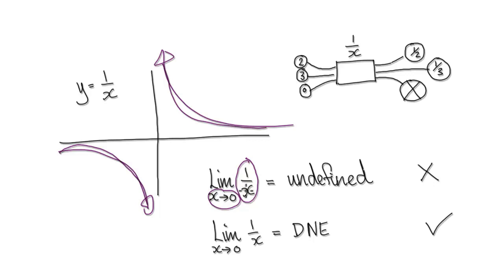But when I ask you, do the two meet up, and then you say the machine breaks down, that doesn't make sense. You have to say it's DNE, does not exist.